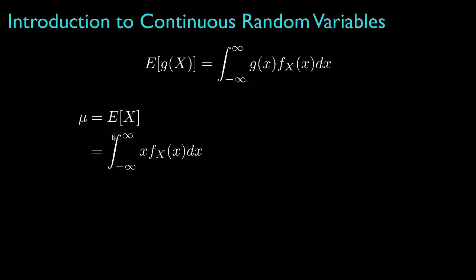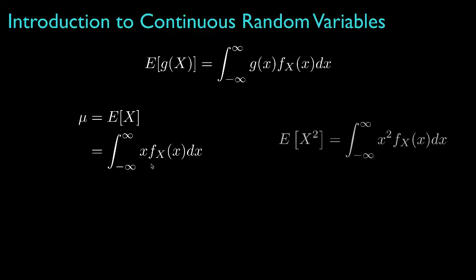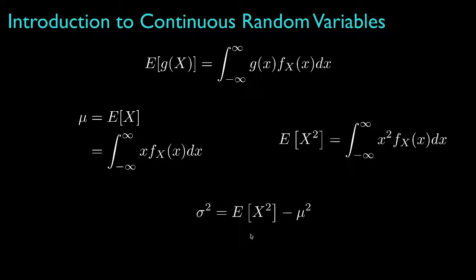The expected value or mean for a continuous random variable is obtained by multiplying the density by all values the random variable can take and integrating over the range. The second moment is obtained by multiplying the density by the square of all values the random variable can take and integrating over the range. The variance is the second moment minus the mean squared.